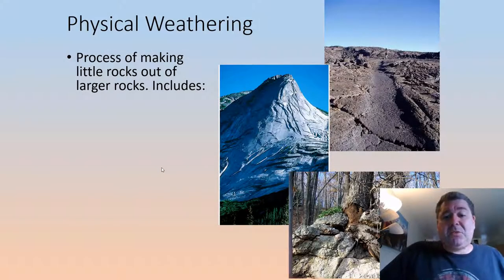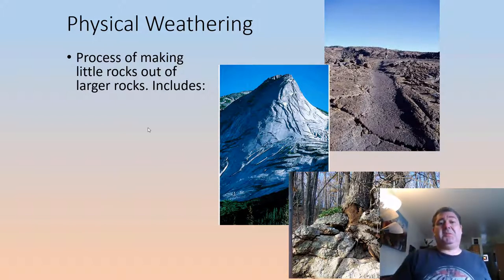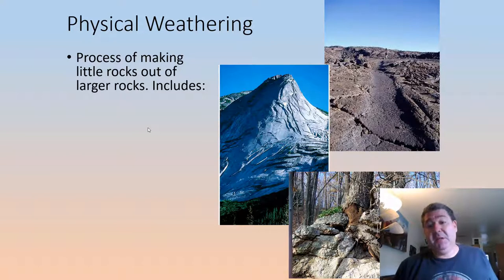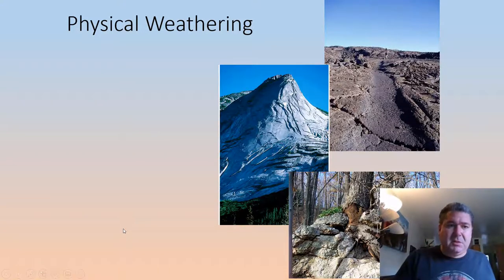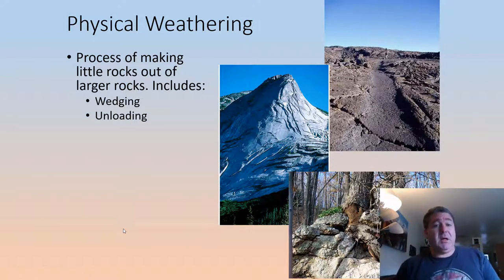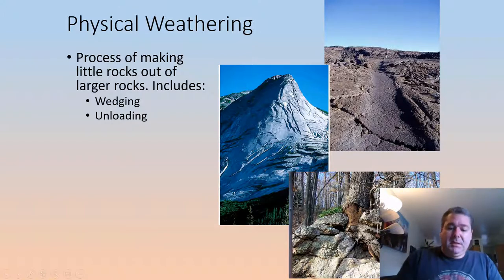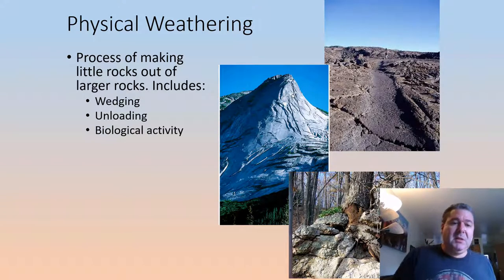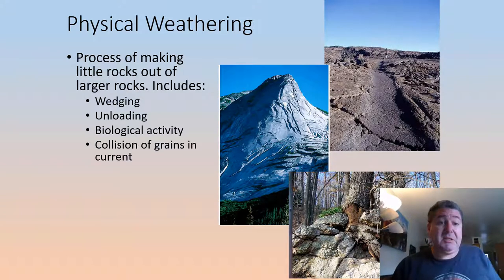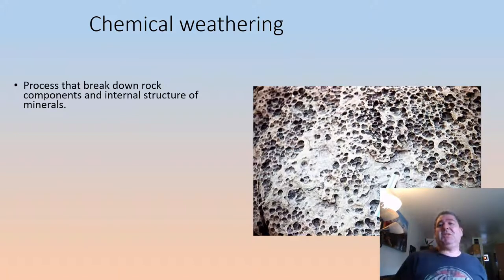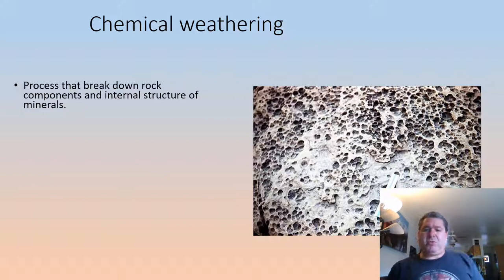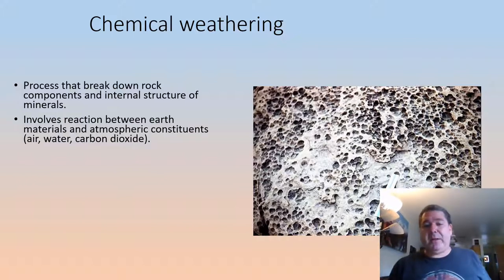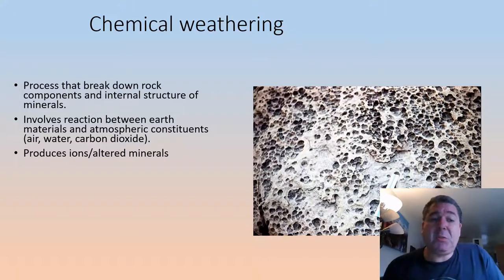We're going to talk about soils and soil formation. We have two different types of weathering: physical weathering and chemical weathering. Physical weathering is the process of making little rocks out of big rocks, and these processes include wedging, frost wedging, unloading, biological activity, and collisions of grains in a current. Chemical weathering, on the other hand, is the process where chemical reactions break down the internal structure and components of minerals, involving interactions between air, water, carbon dioxide, and the minerals themselves.